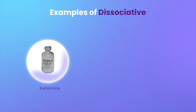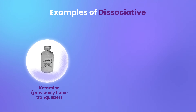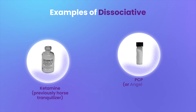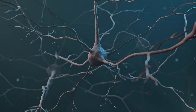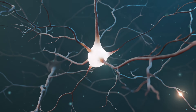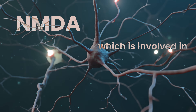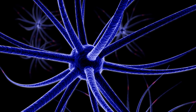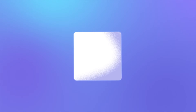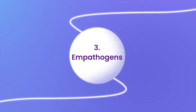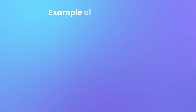Another category is dissociatives. Examples include ketamine, which was previously a horse tranquilizer, and PCP, also called angel dust. These work by blocking a specific receptor in the brain called NMDA, which is involved in glutamate signaling. Glutamate is the chemical that all the neurons in your brain use to talk to each other, and NMDA helps in this neuron-to-neuron conversation.